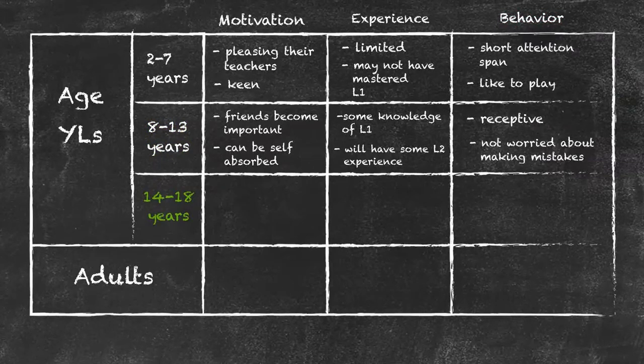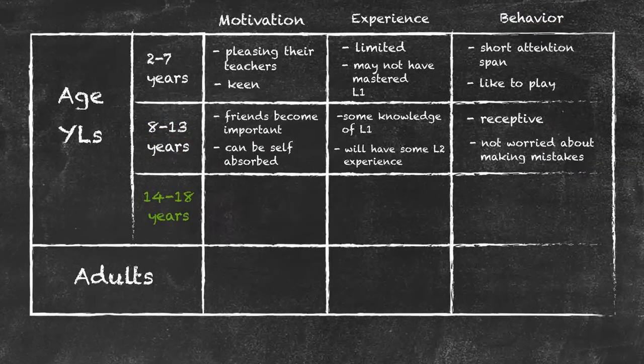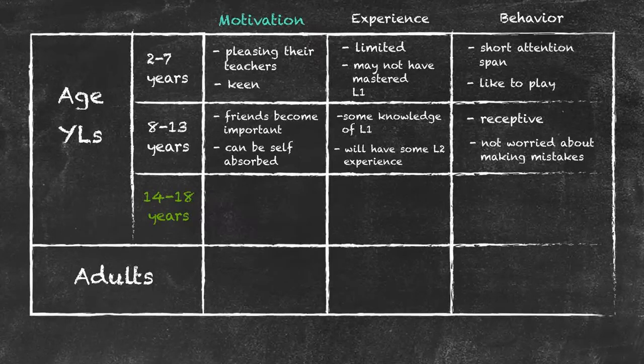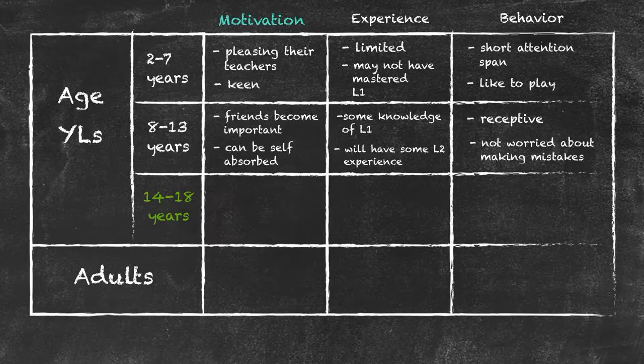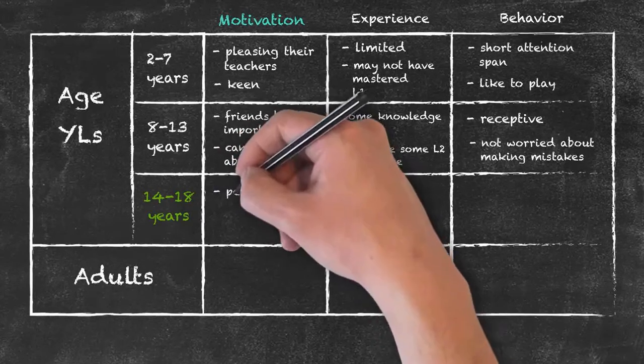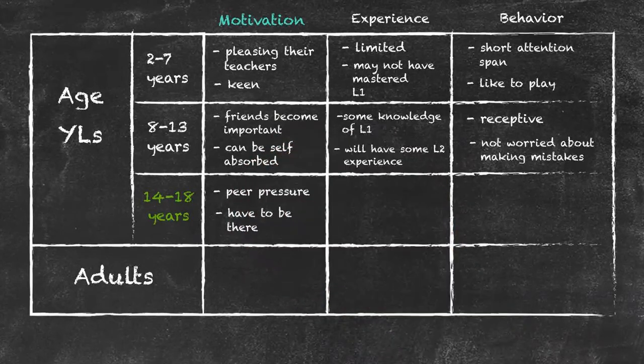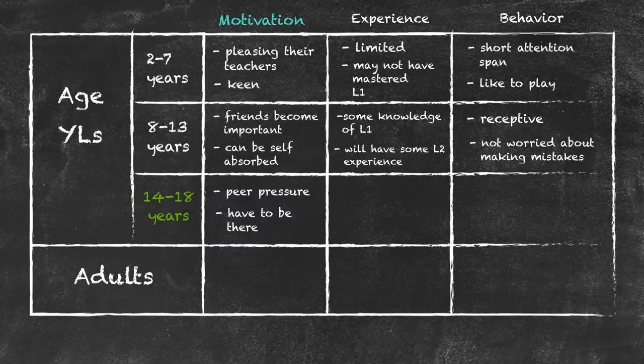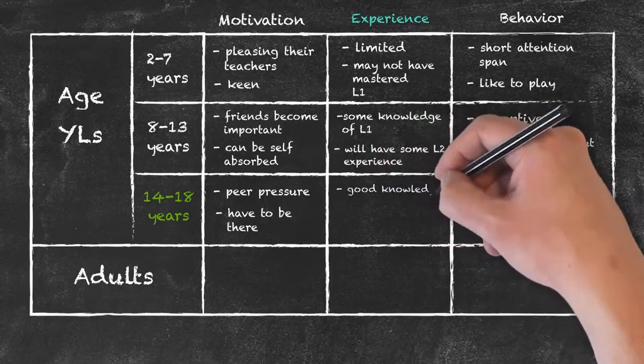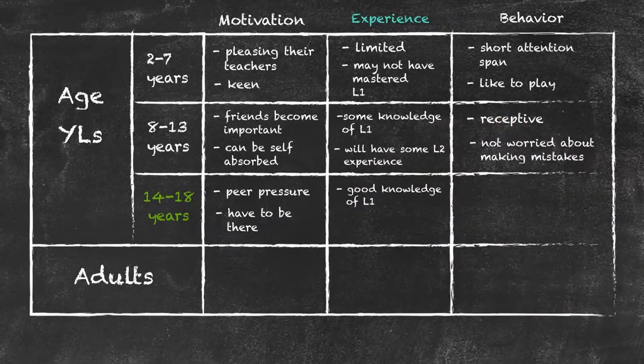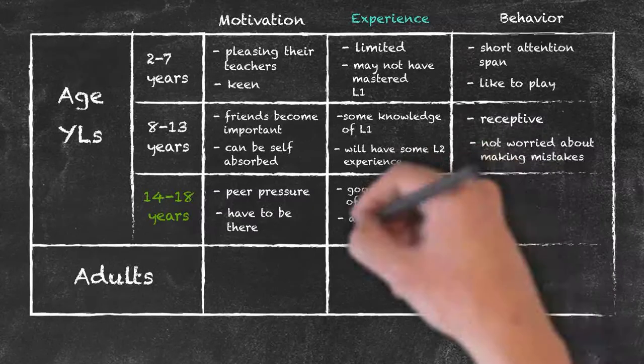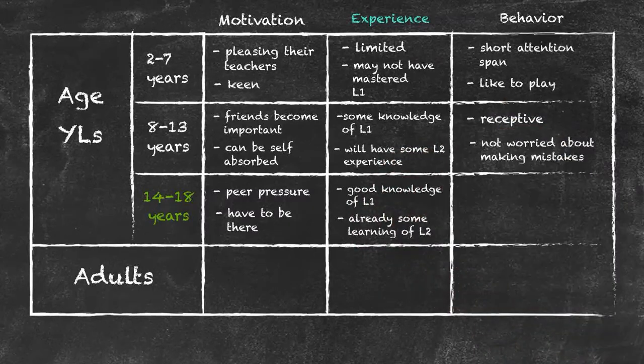Moving on to the 14 to 18 year olds, so the adolescents, their motivating factors tend to move away from themselves and more to their peers. So peer pressure tends to become a bit of an issue and also we have the fact that they have to be there. Quite often at this age they don't have any choice about actually being there and that can create its own problems. Here they will have a good knowledge of L1 and most likely they'll already have some learning of some form or other in L2.